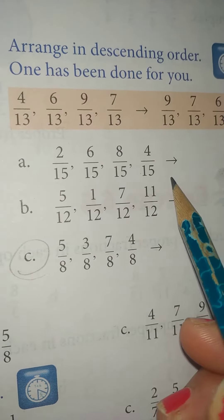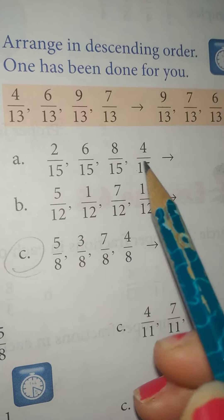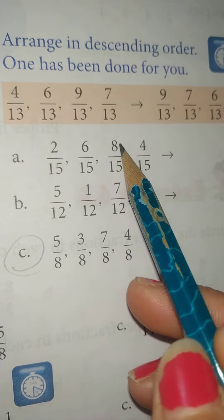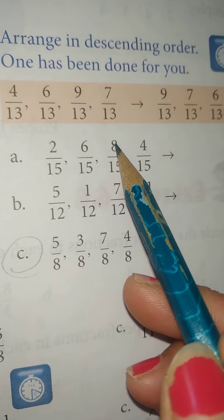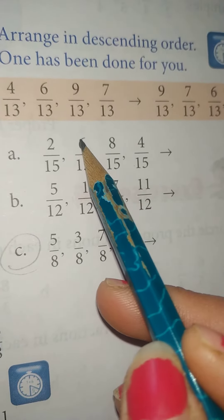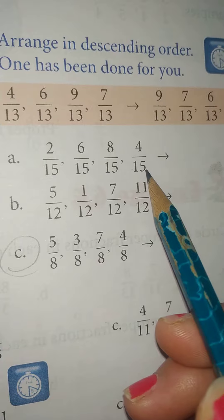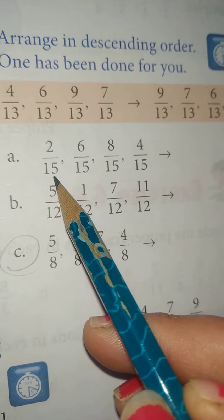ye sare like fraction hai, because inka sabka denominator same hai. So yhaa pe sab se biggest hai, 8 by 15. So sab se pahle hum likhenge 8 by 15, then 6 by 15, then 4 by 15, and then 2 by 15.